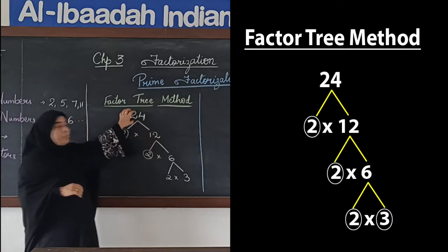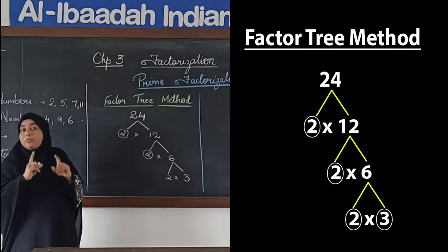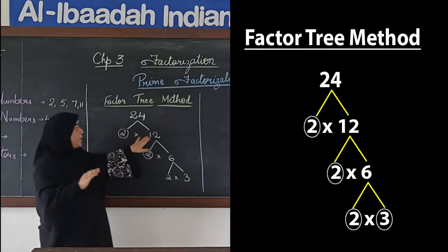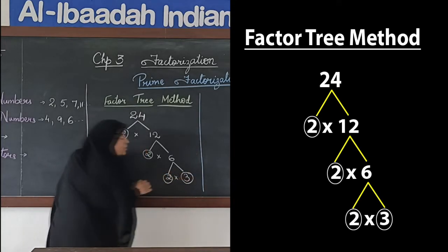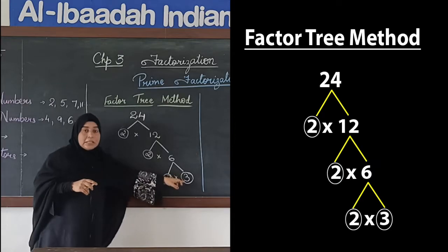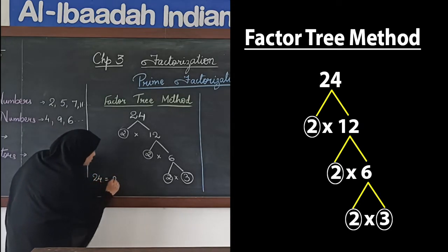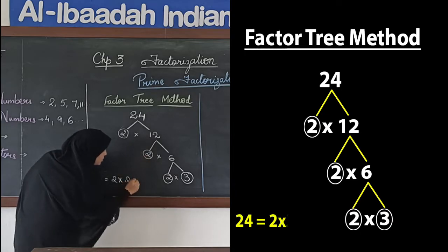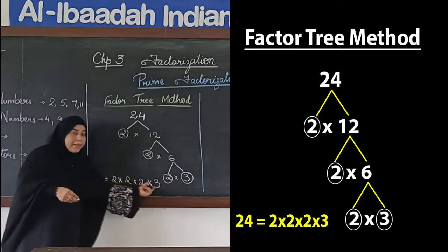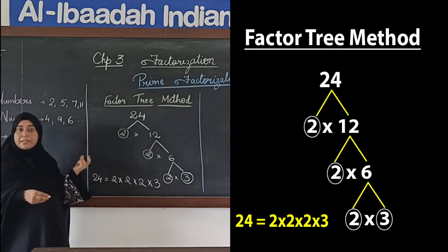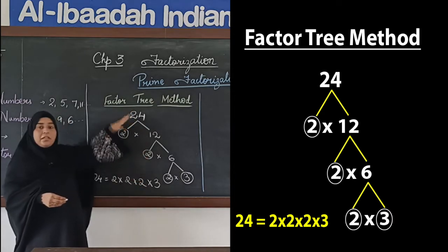These are all factors of 24 — 2, 12, 6, and 3. But now we have to find only the prime factors. We are not going to take 12 and 6 because they are not prime numbers — they are composite numbers. So we will be taking only the prime numbers. The numbers that I have circled are the prime factors of 24. So 24 = 2 × 2 × 2 × 3. This is the prime factorization of 24 — only the prime factors, not the composite factors.